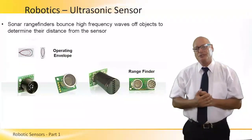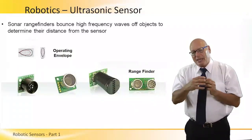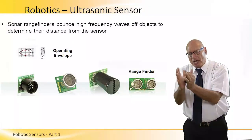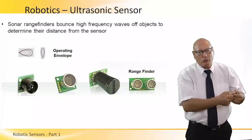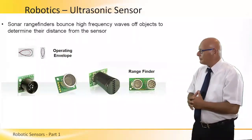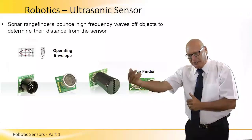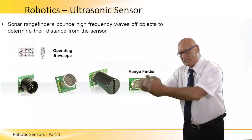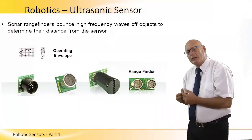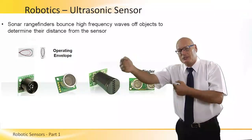Here are some samples of ultrasonic sensors. First, the operating envelope — we can see the egg shape of the envelope of the ultrasonic waves. We can have them narrower or wider, depending on the investment and the needs. Here is a set of ultrasonic sensors that will do the job. The one on the right, a range finder, is a transmitter and receiver combined. The system will transmit ultrasonic waves, the receiver will detect the reflected wave some time later, and based on the time difference between the transmitted and received wave, we will know the range — the distance of that particular object.